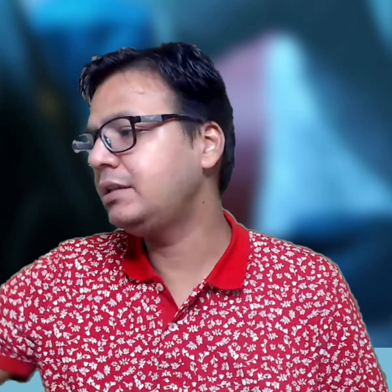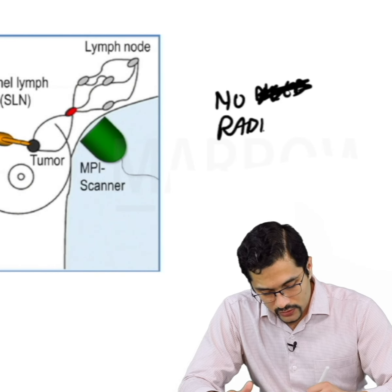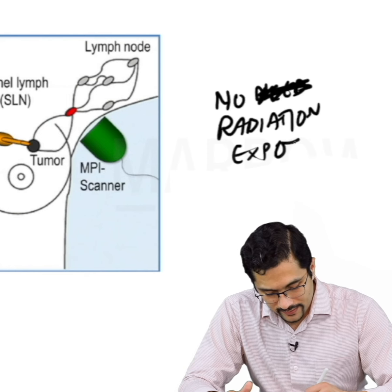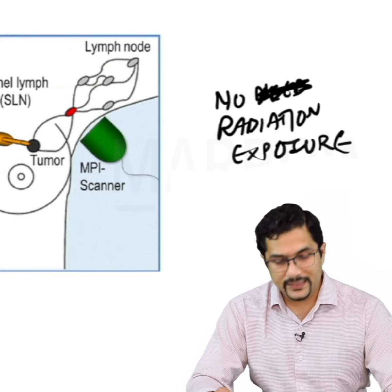This is known as huffing, and there is no radiation exposure. That is the example of the technique needed to identify the sentinel lymph node.